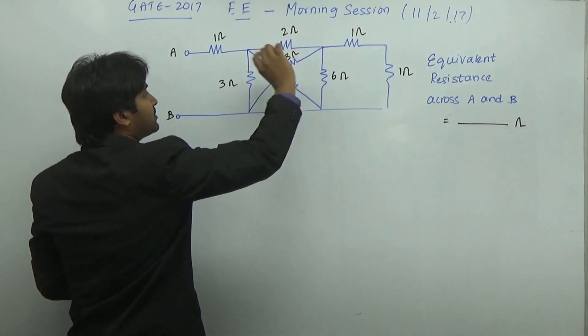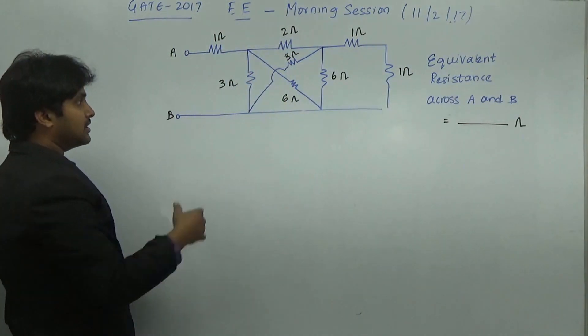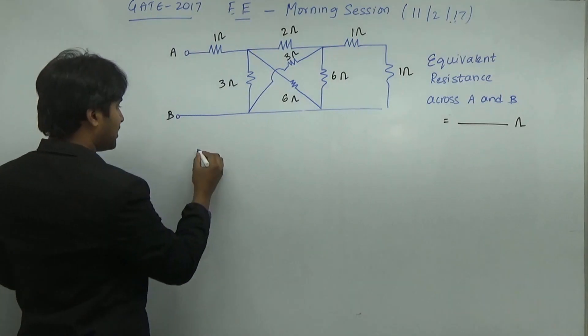And similarly, the 3 ohm resistance and the 6 ohm resistor, they are also in parallel. So if I can redraw it once again in a simpler way.